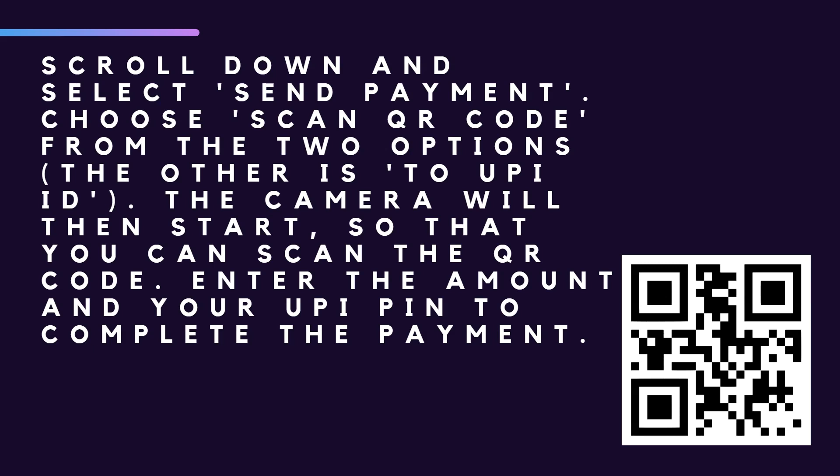Here you can scan the QR code of others to send money, and you also have your own QR code that you can show to other people so they can scan it and send money to you — it works both ways. Once you scan a QR code, you again enter the amount and provide your UPI PIN, and your payment will be complete. This is how you can use WhatsApp Payments to send money to both your contacts and unknown people.